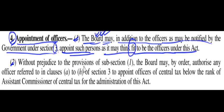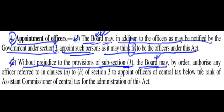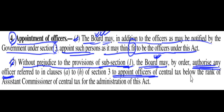Subsection 2, without prejudice to the provisions of Subsection 1 — meaning without affecting those provisions — the Board may authorize any officer for the appointment of officers. So the Board has the power to authorize any officer to appoint further officers.